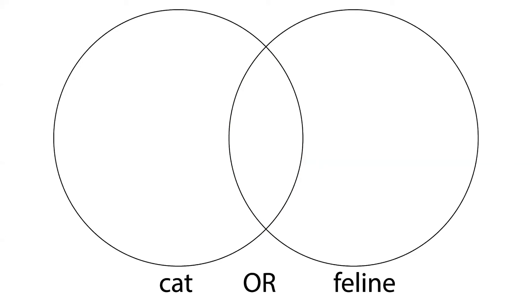The Boolean operator OR is useful to use between synonyms if you aren't sure which will be used by the authors of the articles you're searching for. In this case, if we search cat or feline, what part of the Venn diagram will contain our results?